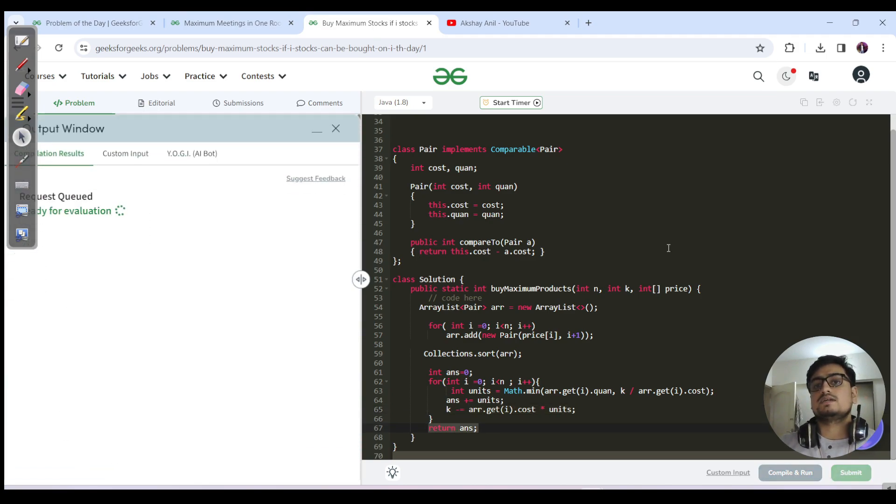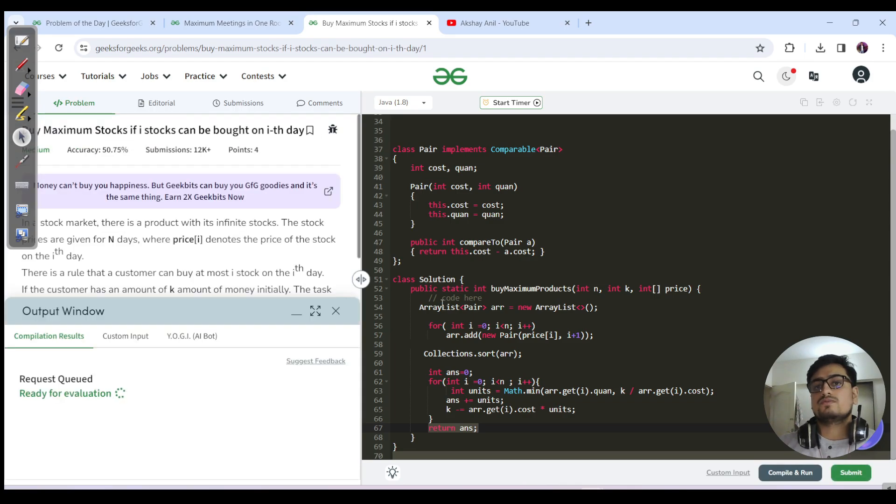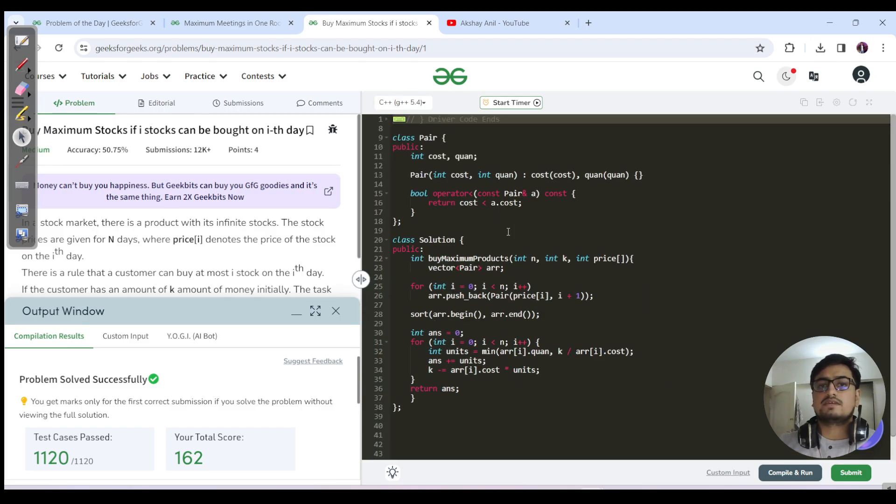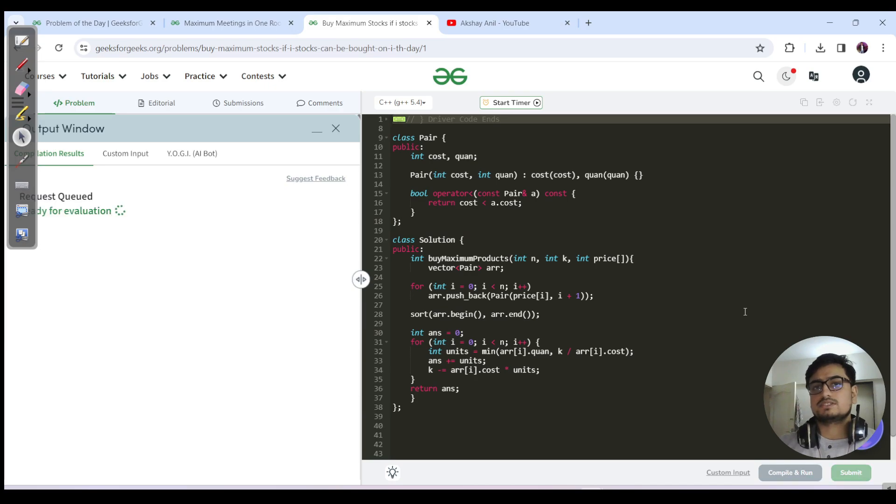What's the time and space complexity? O(n log n) for sorting and rest is O(n), so worst case is O(n log n). Space is O(n) because we used ArrayList of pairs. Let's switch to the C++ code. It's the same we've done in Java and C++. Let me hit the submit button, and yes, that's done.